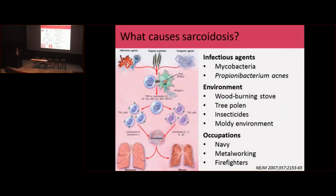Everything starts with an exposure to some antigen — but what is this antigen? What causes this disease? Unfortunately, we still don't know, but I think we're going to get there. With all of the research that FSR is helping us do now, hopefully in the near future we'll find out. Just to show a few examples: firefighters — the responders to 9/11 — some of them actually developed sarcoidosis. It's a very well-established cause now, the exposure to that event.